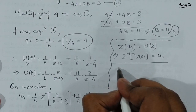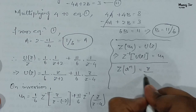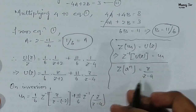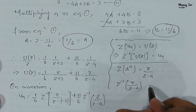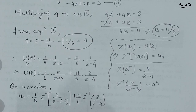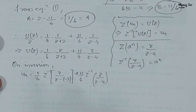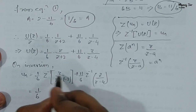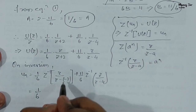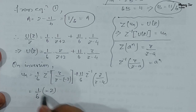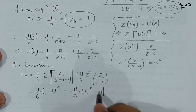We know that the Z-transform of aⁿ equals z/(z − a), so the inverse Z-transform of z/(z − a) equals aⁿ. Applying this: for the first term, a = −2, giving (−2)ⁿ, and for the second term, a = 4, giving 4ⁿ. So the final answer is u[n] = (1/6)(−2)ⁿ + (11/6)(4ⁿ).